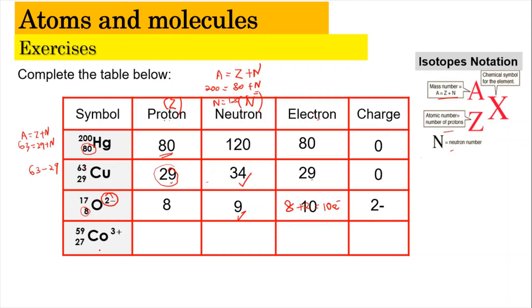For cobalt 3+ (Co³⁺), the proton number is 27. Neutrons: 59 − 27 = 32. In the neutral state the electrons would be 27; however, the 3+ charge means it donated 3 electrons, so the number of electrons is 27 − 3 = 24, and the charge is 3+.